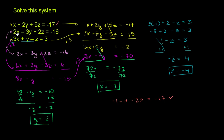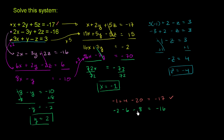For the second constraint: 2 times x is 2 times negative 1, which is negative 2. Minus 3 times y: 3 times 2 is 6, so minus 6. Plus 2 times z: 2 times negative 4 is negative 8. Negative 2 minus 6 is negative 8, subtract another 8 gives negative 16. That equals negative 16, so it meets the second constraint.